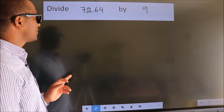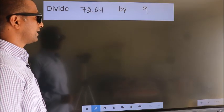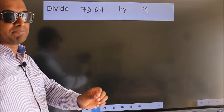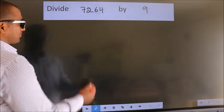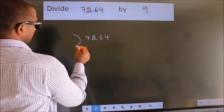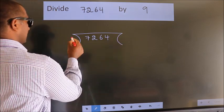Divide 7264 by 9. To do this division we should frame it in this way. 7264 here, 9 here.